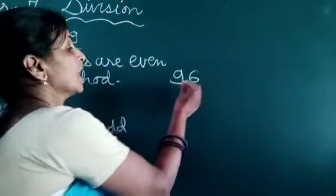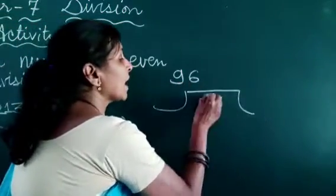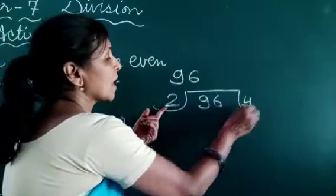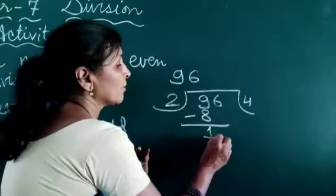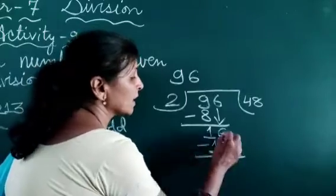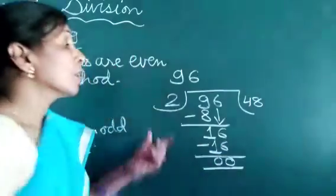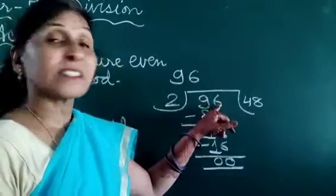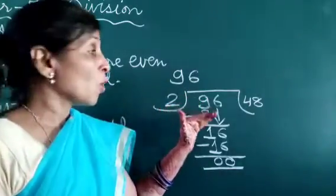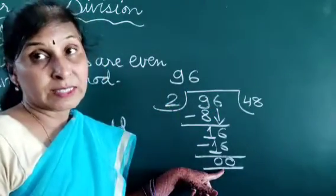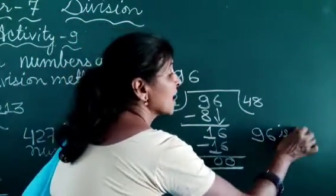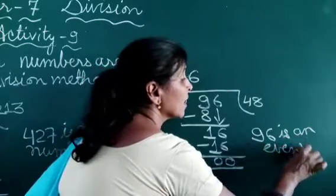Next is 96. Now 96 is divided by 2. 4 twos are 8, we write here, subtracted — 1 remains. Bring down 6. 2 eights are 16, we write here, subtracted — 0 comes. When we divide 96 by 2, no remainder is left. Thus 96 is an even number.